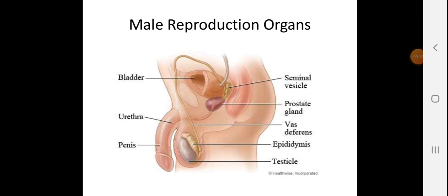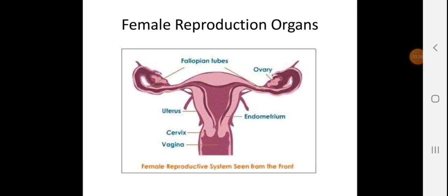If possible, try to draw the figure in your notebook, because in Class 10 we will study male and female reproduction in detail — it might help you then. Now, the female reproductive organs: there are two ovaries, fallopian tubes (also called oviducts), a uterus, endometrium, cervix, and vagina. This is how the female reproductive system looks from the front.